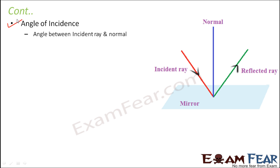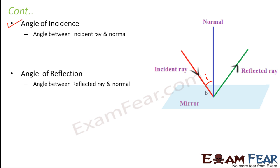The next term is the angle of incidence. Whenever the incident ray strikes the mirror, it will strike at a certain angle — sometimes large, sometimes small; the ray can be very steep or very slant. The angle of incidence is the angle between the normal and the incident ray. Similarly, the angle of reflection is the angle between the reflected ray and the normal. We denote angle of incidence with a small 'i' and angle of reflection with a small 'r' — these are the five important terms for reflection of light.